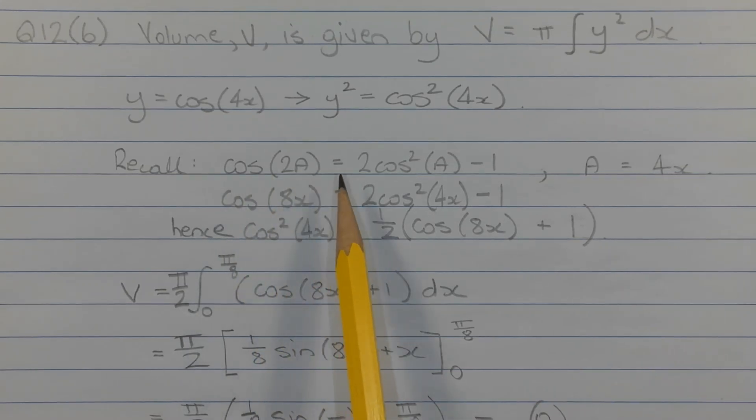Recall cos 2a is equal to 2 cos squared a minus 1, where in this case a is equal to 4x. So cos 8x is equal to 2 cos squared 4x minus 1. Making cos squared 4x the subject, we get cos squared 4x is equal to half times cos 8x plus 1 in brackets.